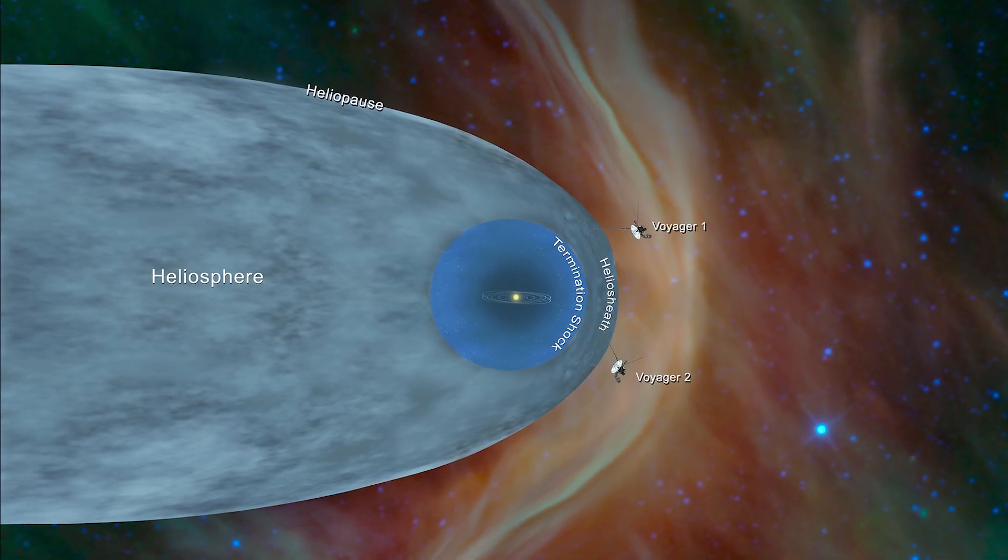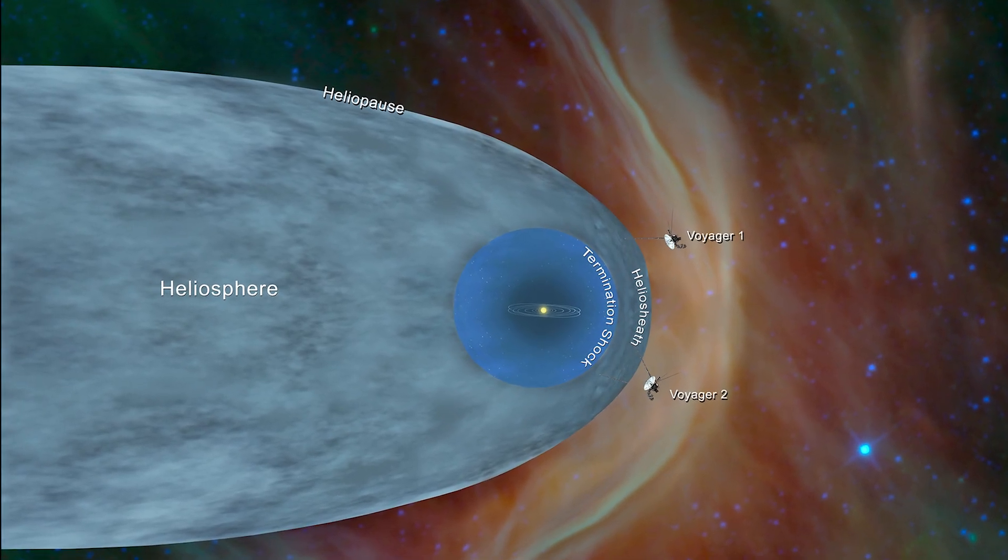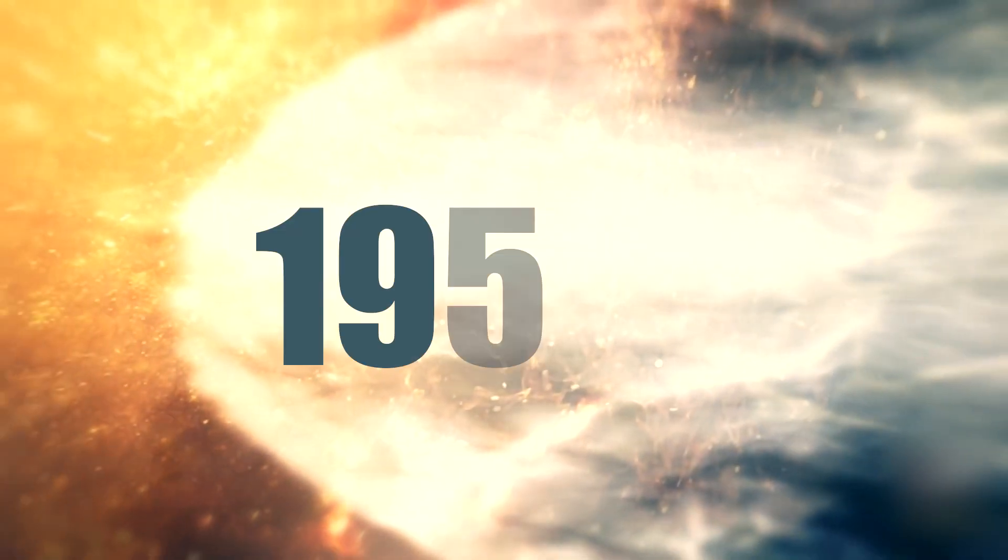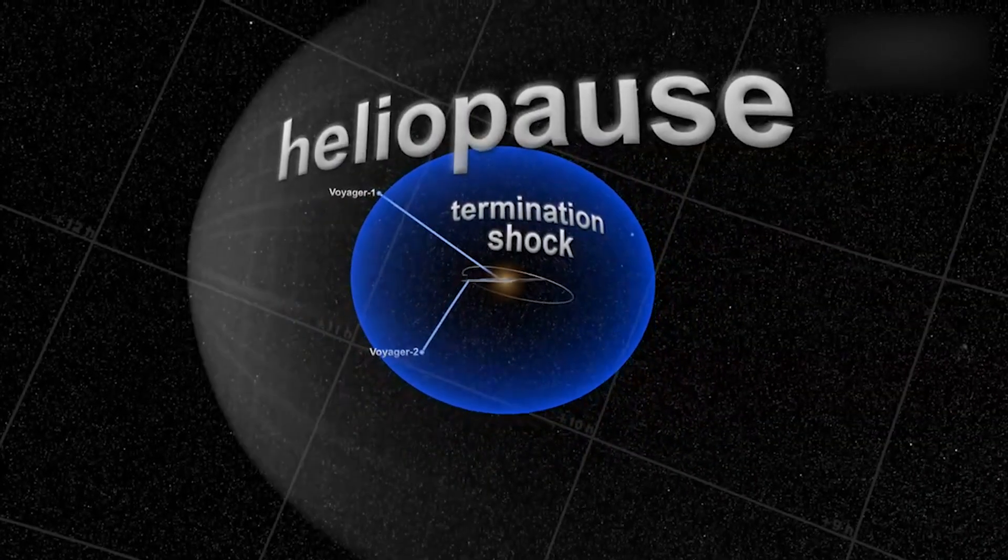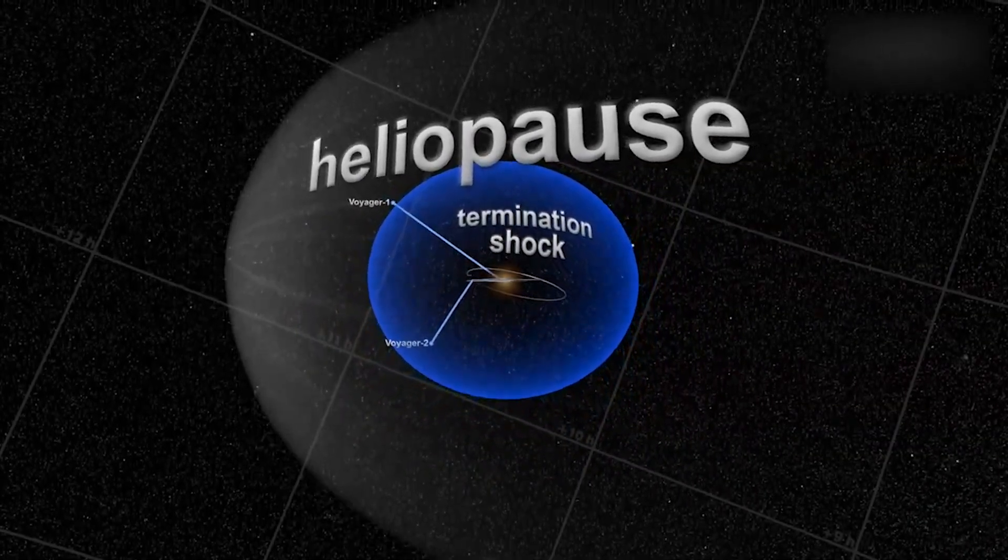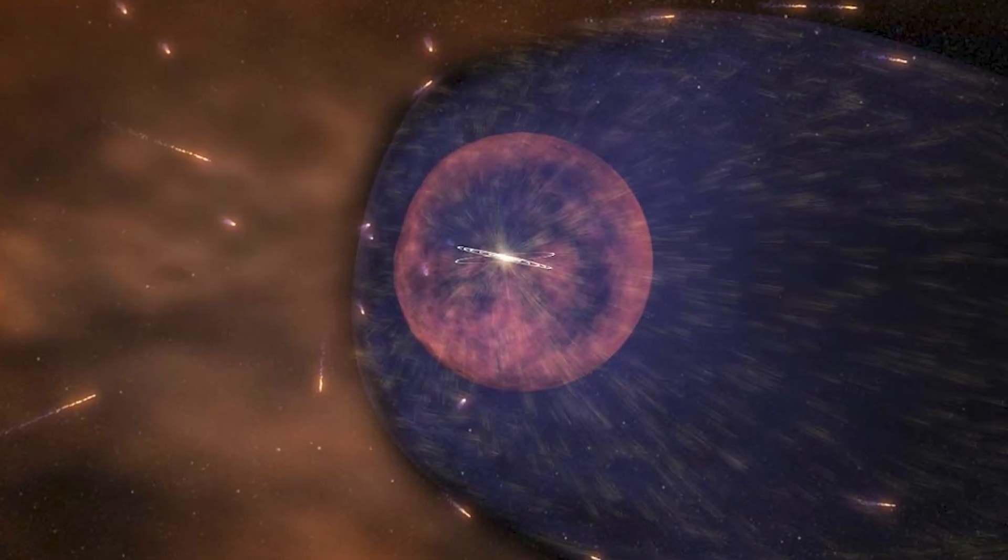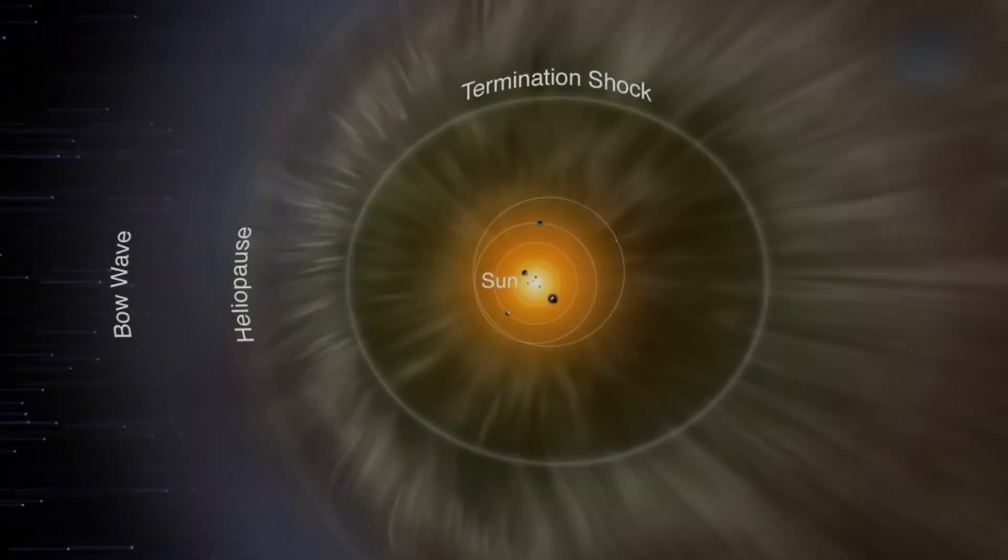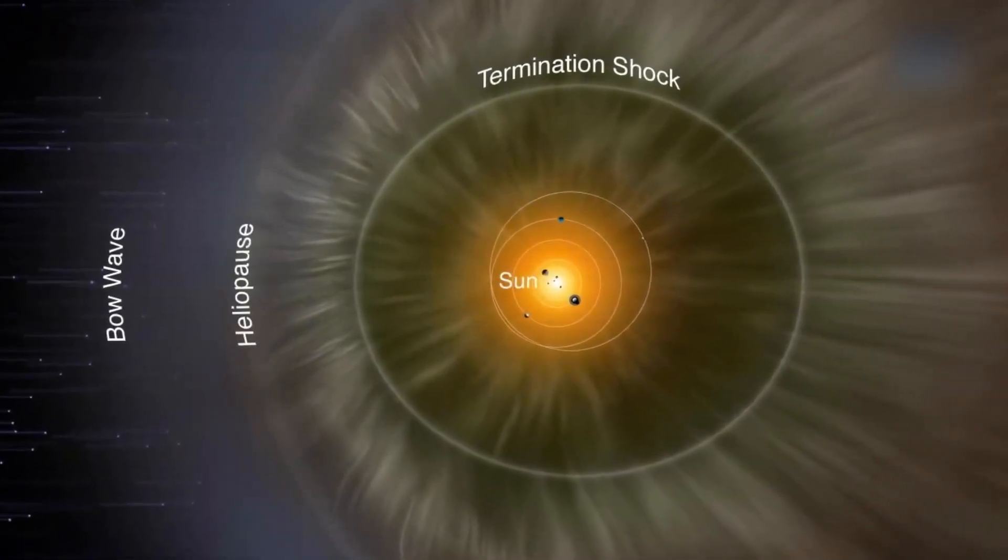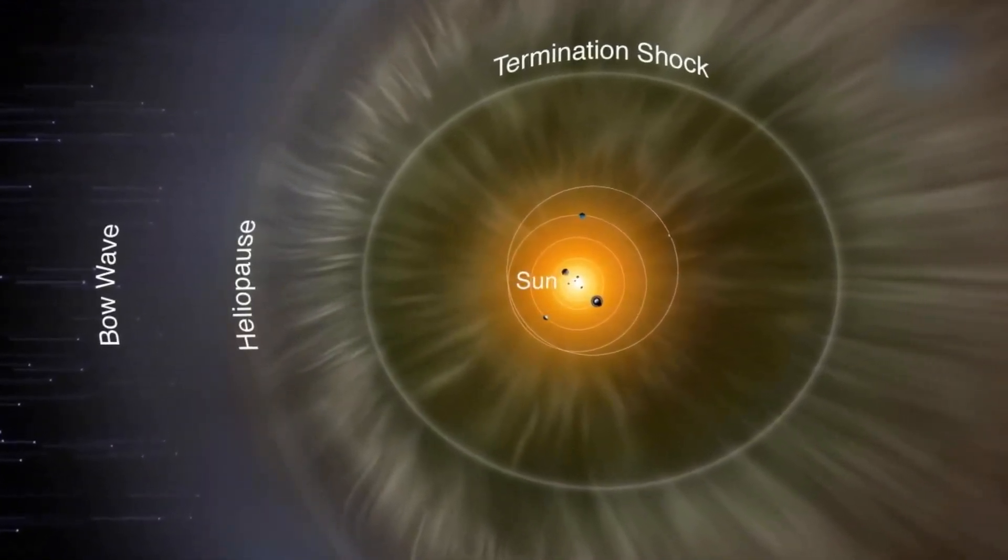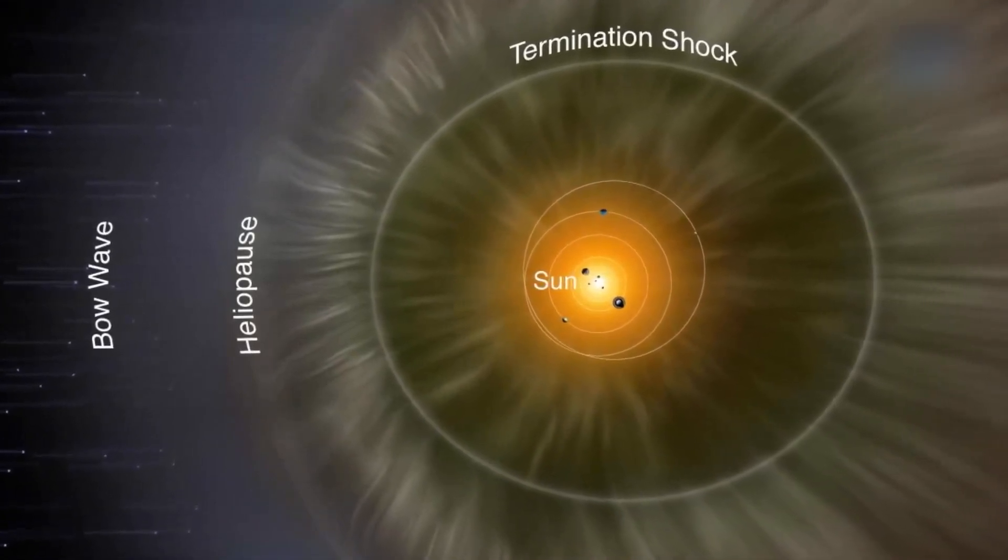But have you ever given any thought to how the heliopause was first discovered? Once the heliosphere was discovered in the early 1950s, the heliopause was a natural consequence of the space age's dawn. Once the heliosphere was proven to exist by satellite data, physics models of its interaction with the interstellar medium showed that the heliopause must exist somewhere.